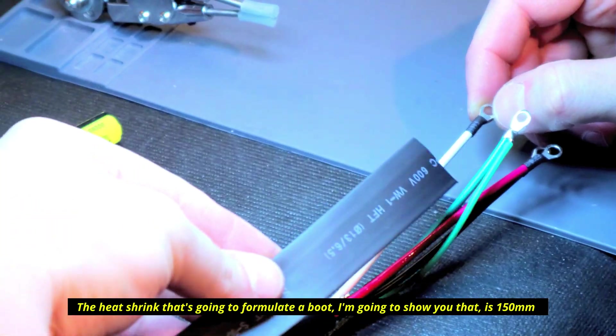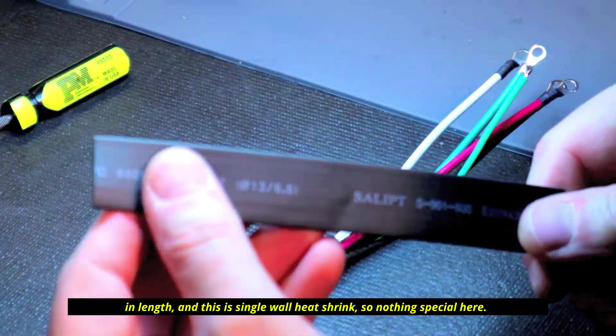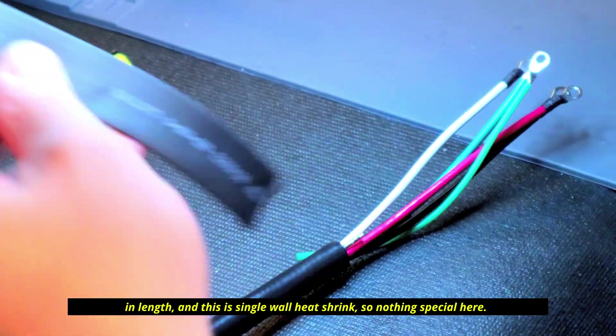You can see we've got our leads coming out. The heat shrink that's going to formulate a boot - I'm going to show you that - is 150 millimeters in length. This is single wall heat shrink, so nothing special here.